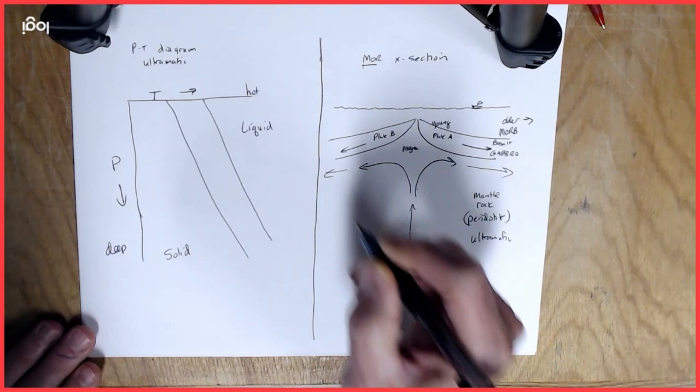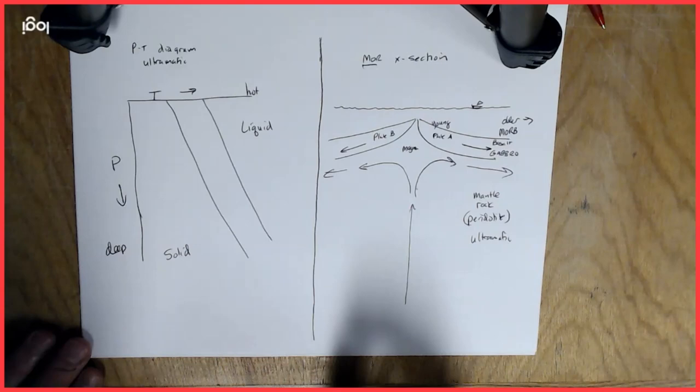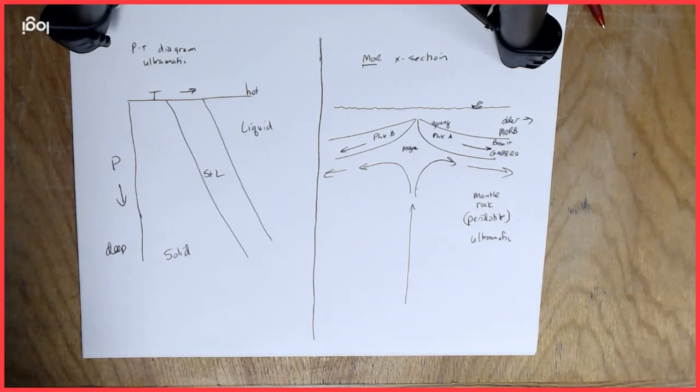The liquid phase is favored by high temperatures and lower pressures, so that's going to be towards the top of the graph and towards the right. And that means in between these two lines we have a solid plus liquid phase or a partial melt phase.